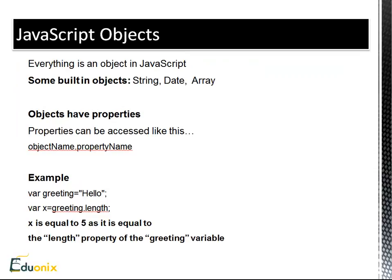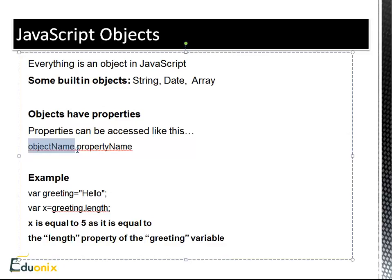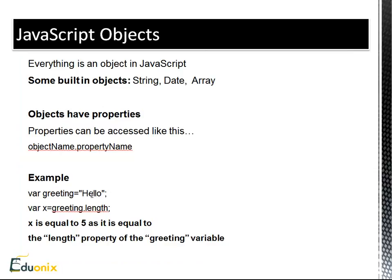Okay, objects. In JavaScript, pretty much everything is considered an object. A string, numbers, dates, arrays are all considered objects. And objects have properties and methods. Properties are basically characteristics. And we can define properties with dot syntax. So we want to say the object and then dot and then the property name. So here's an example.